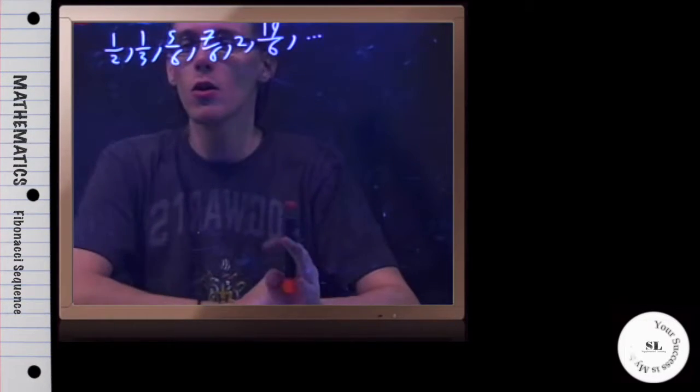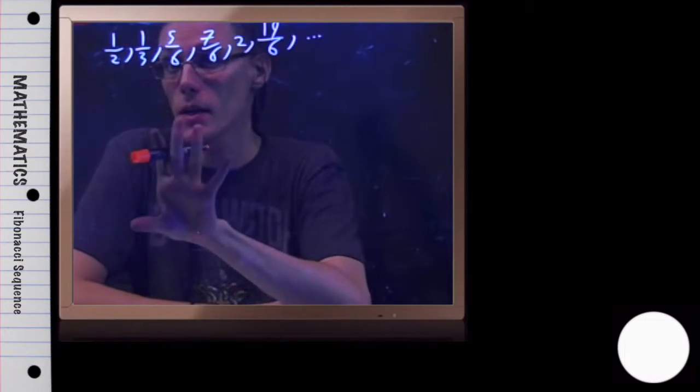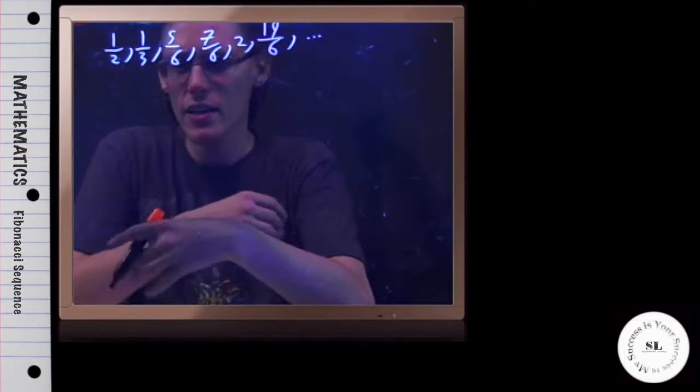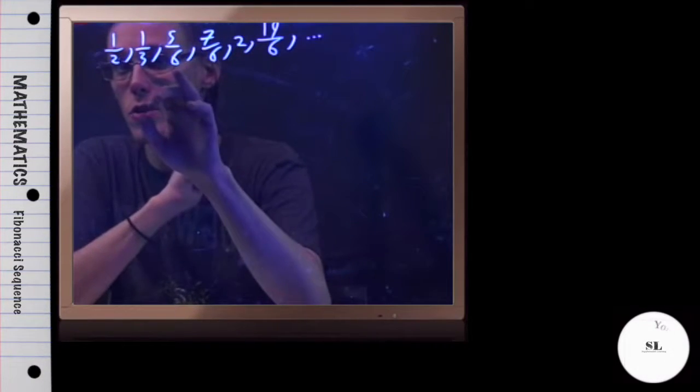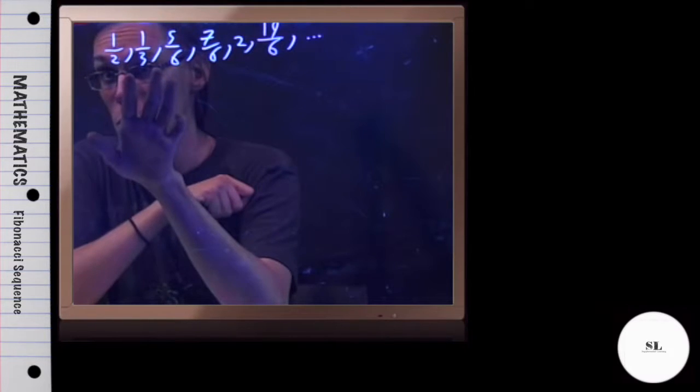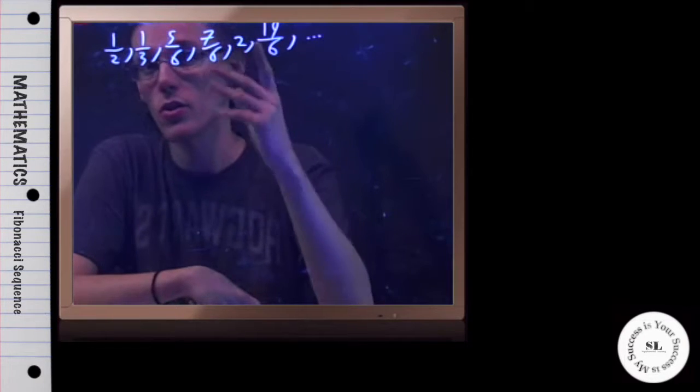All right, now in this example, we're going to be looking at this sequence here and determining if it is a Fibonacci type sequence. That is, a sequence where to figure out a current term, I would just add the previous two terms. And if this is a Fibonacci sequence, we're going to figure out what the next two terms are going to be.